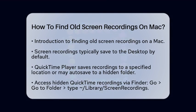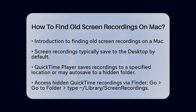First, most screen recording applications save files to the desktop by default. This means if you have not changed the settings, your recording should be sitting there. For QuickTime Player, the recordings are saved to the location you specified when you stopped the recording. If you did not save it, QuickTime may have autosaved it to a hidden folder.